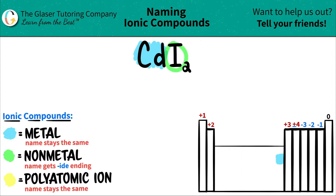Iodine, or I, on the other hand, is part of the halogens. It's right here on the periodic table. It's in group 7A or 17. And those are your non-metals, so iodine is a non-metal.